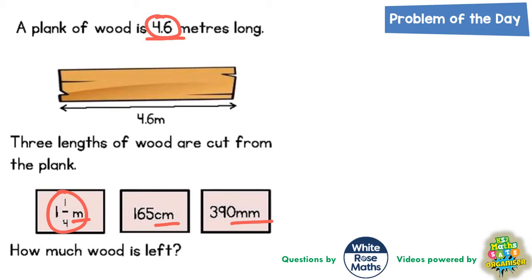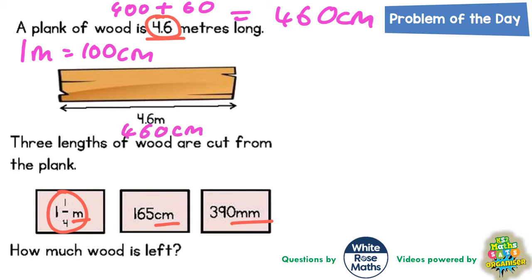The first thing we need to do is convert everything into the same unit, so it's a good idea to keep things simple and turn everything into centimeters. Well, one meter is 100 centimeters, so 4 meters would be 400 centimeters. Then 0.5 would be a half, or half of 100 is 50, so 0.5 meters would be 50 centimeters. That means 0.6 meters would be 60 centimeters, so 4.6 meters is actually 460 centimeters. The plank of wood is 460 centimeters before anything is being cut off.